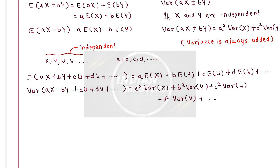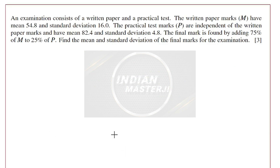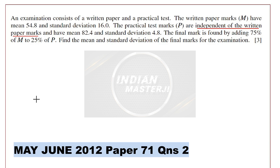Now let's take a past paper question based on the same concept. An examination consists of a written paper and a practical test. The written paper marks M have mean 54.8 and standard deviation 16.0. The practical marks are independent of the written paper marks and have mean 82.4 and standard deviation 4.8. The final mark is found by adding 75% of the written marks to 25% of the practical marks. Find the mean and the standard deviation of the final marks.